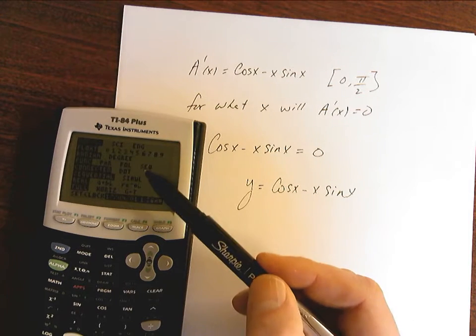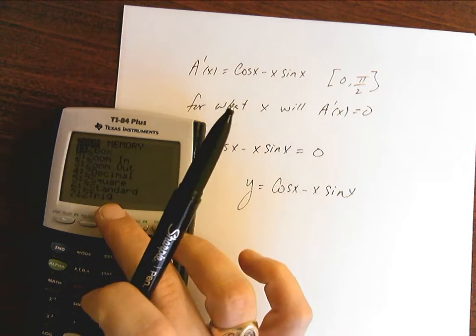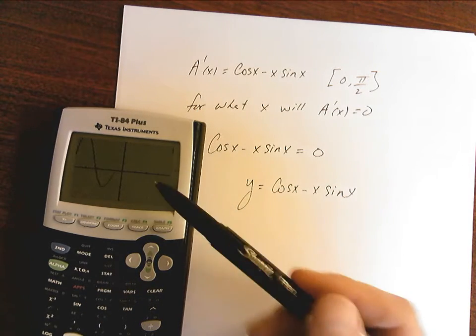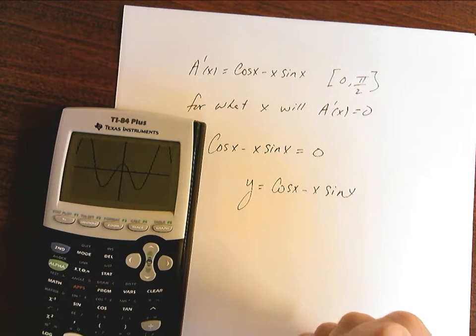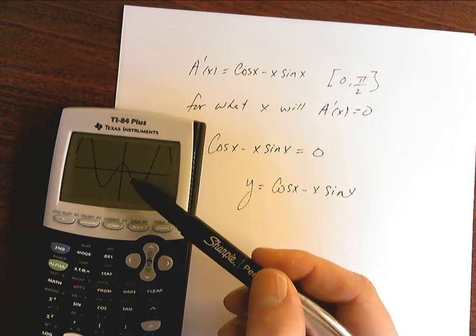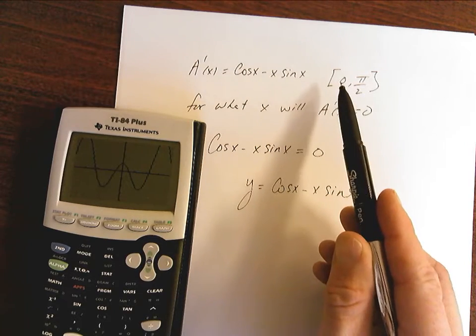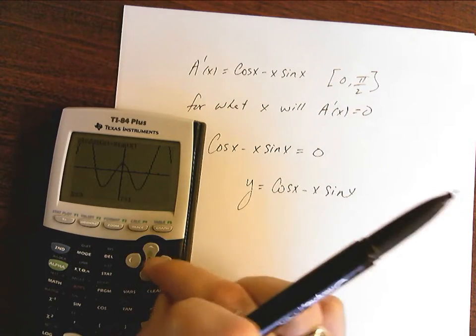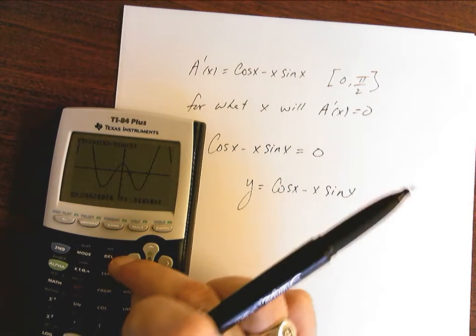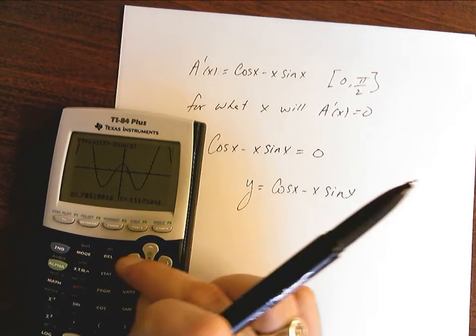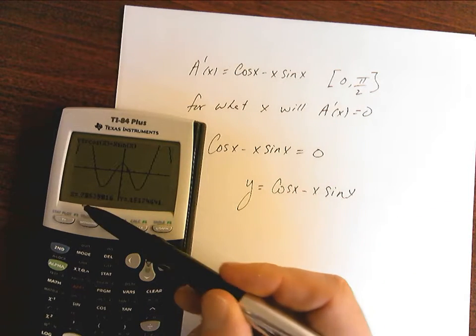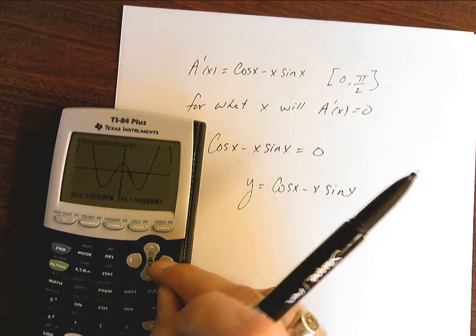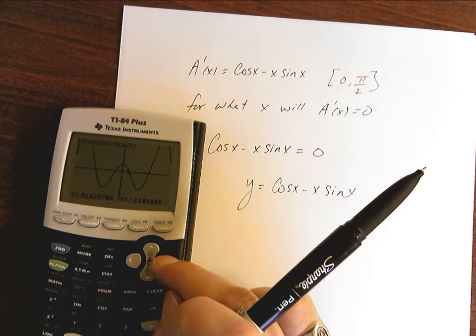What I'm going to make sure is that in my mode I'm in radians and that's going to give me my answer in radians. I'm going to make sure that when I'm in zoom, I go to 7 which is zoom trig and that's going to give me a nice standard window. What I'm looking for is my zero between zero and π/2. I can use trace and move along the axis and try to come up with that answer. I notice it's going to be between x equals 0.7 and 0.9 somewhere in there.